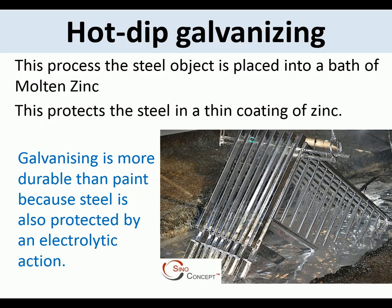Hot dip galvanizing: steel objects, such as railings, are dipped into a bath of molten zinc, which protects the steel with a thin coating of zinc. Galvanizing is more durable than paint because it is also protected by an electrolytic action, making it very durable. It's used on items like railings to give a durable, rust-proof finish.